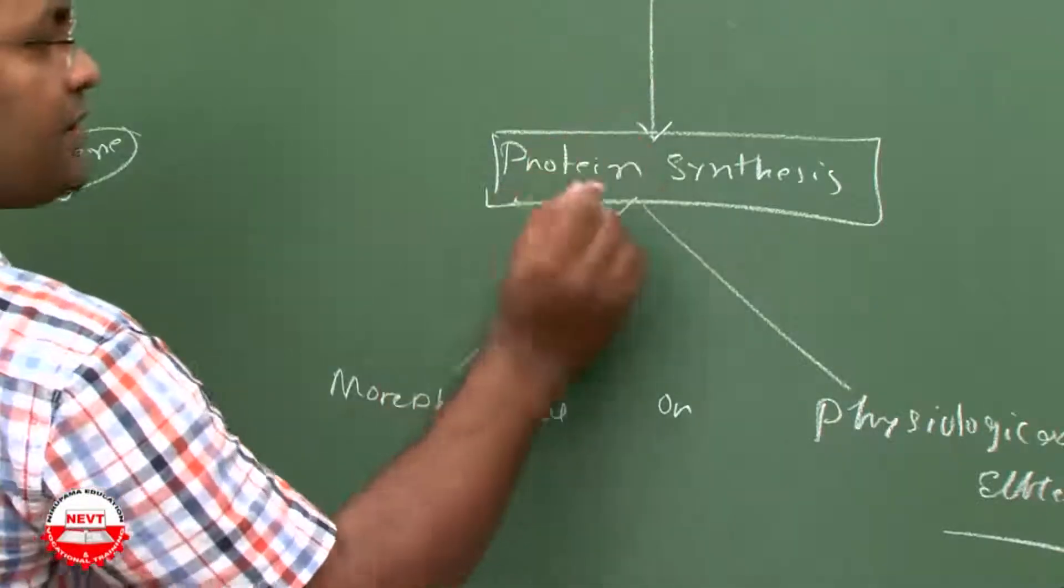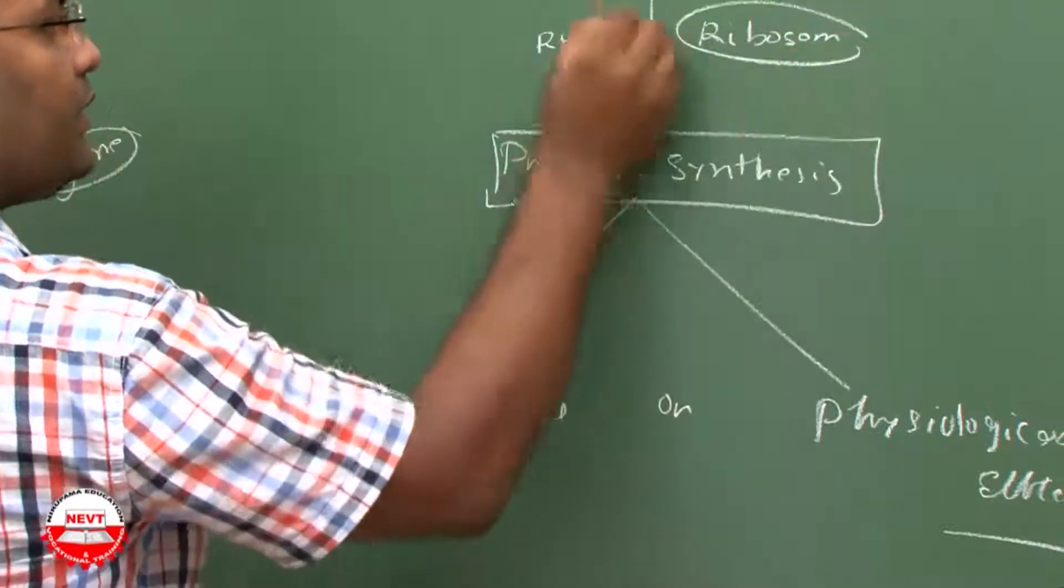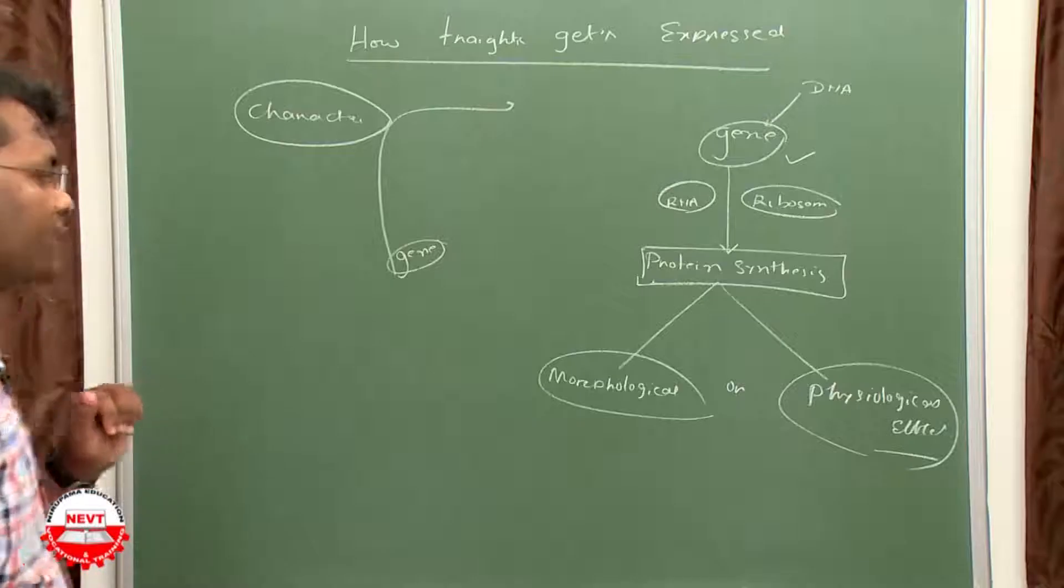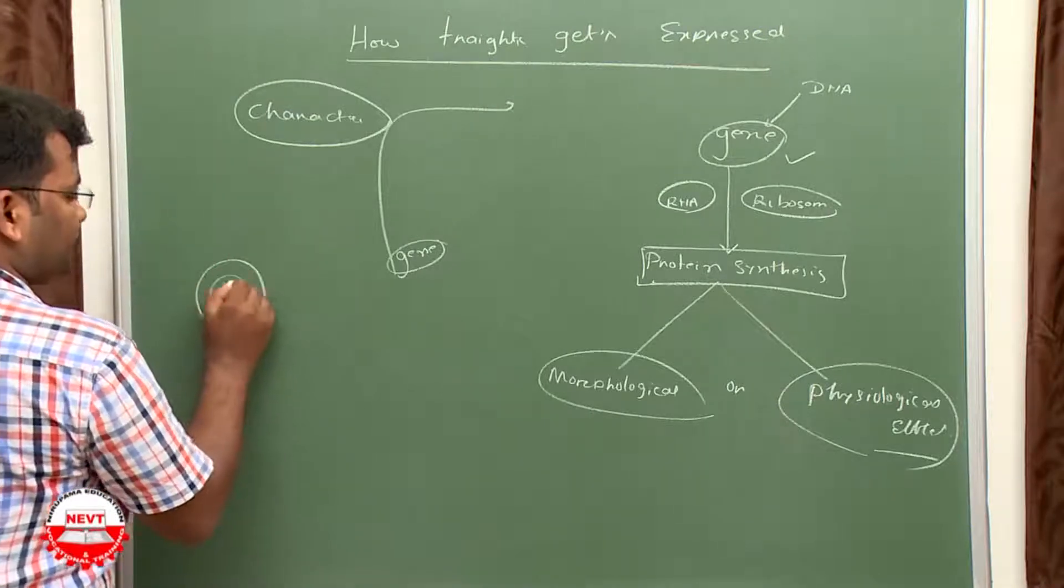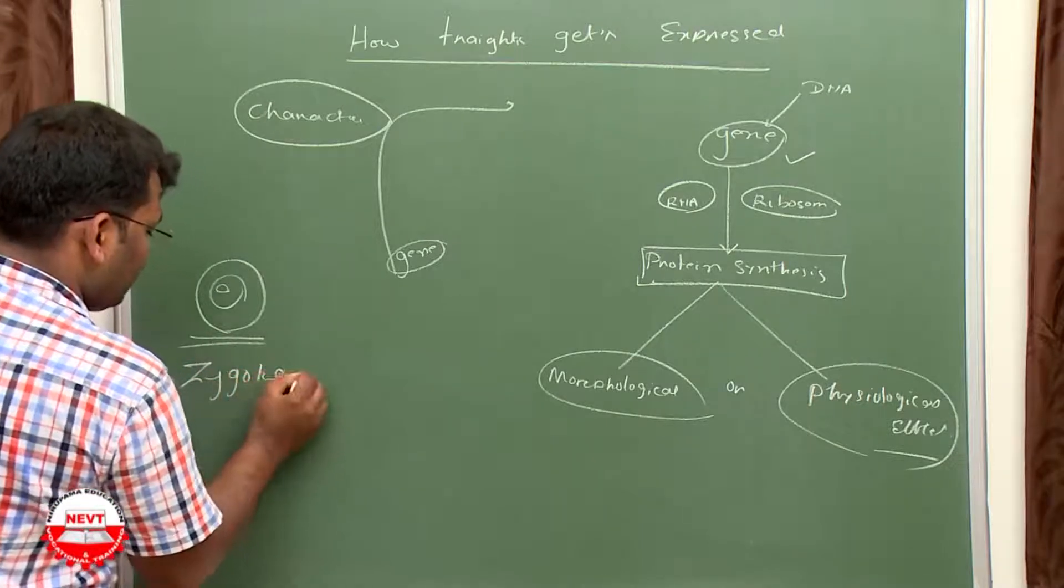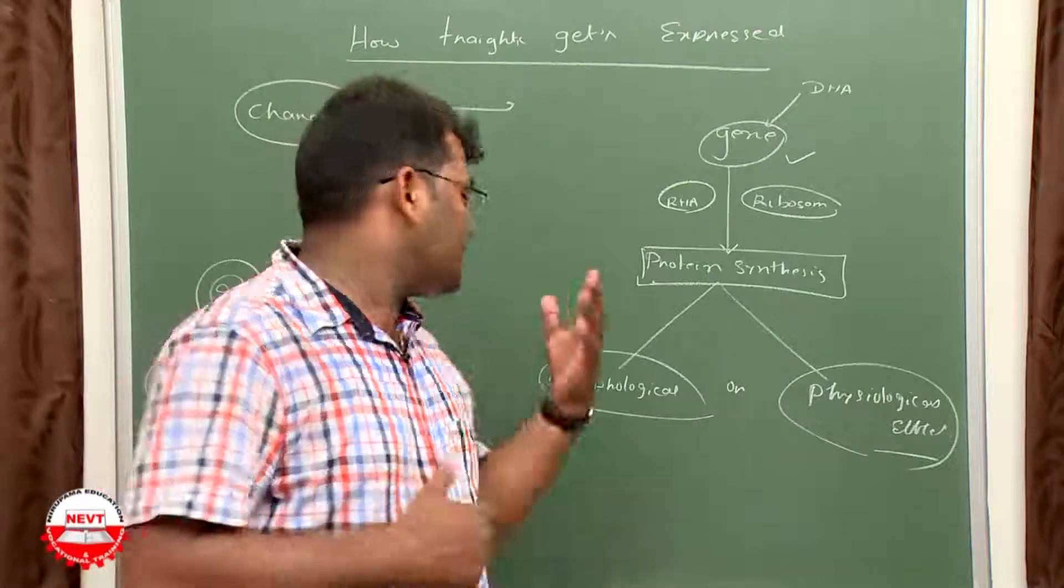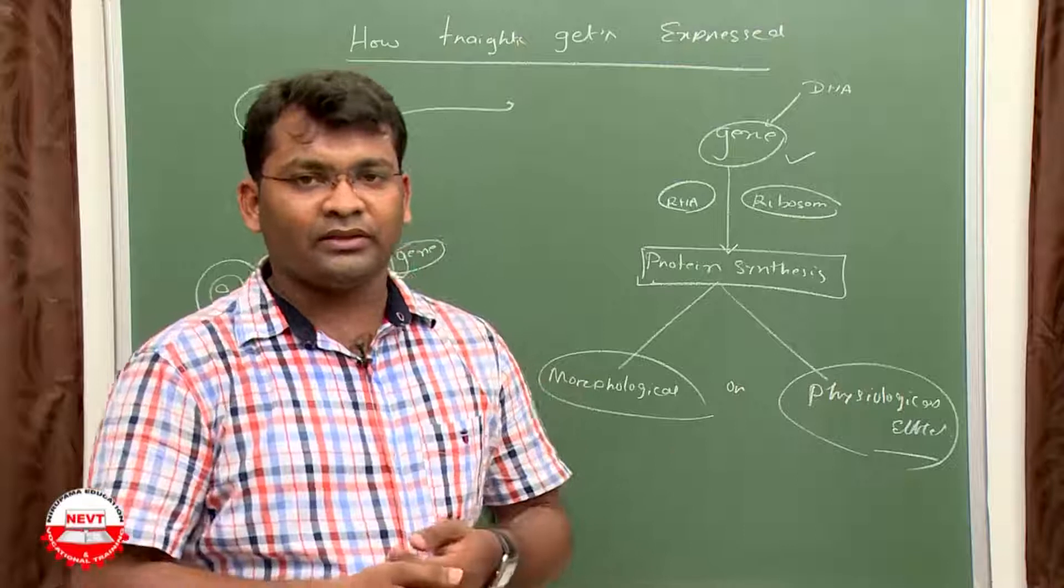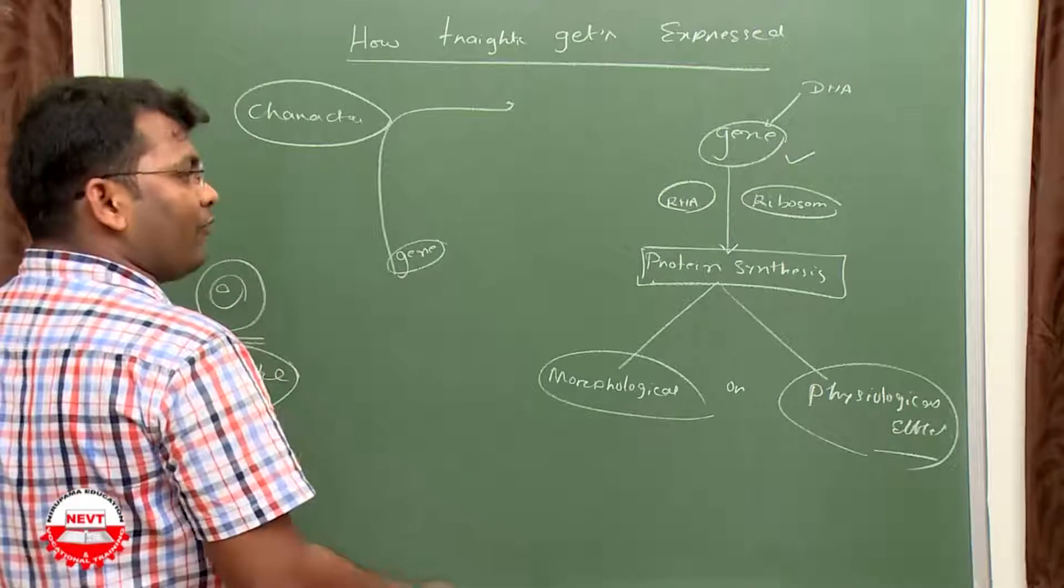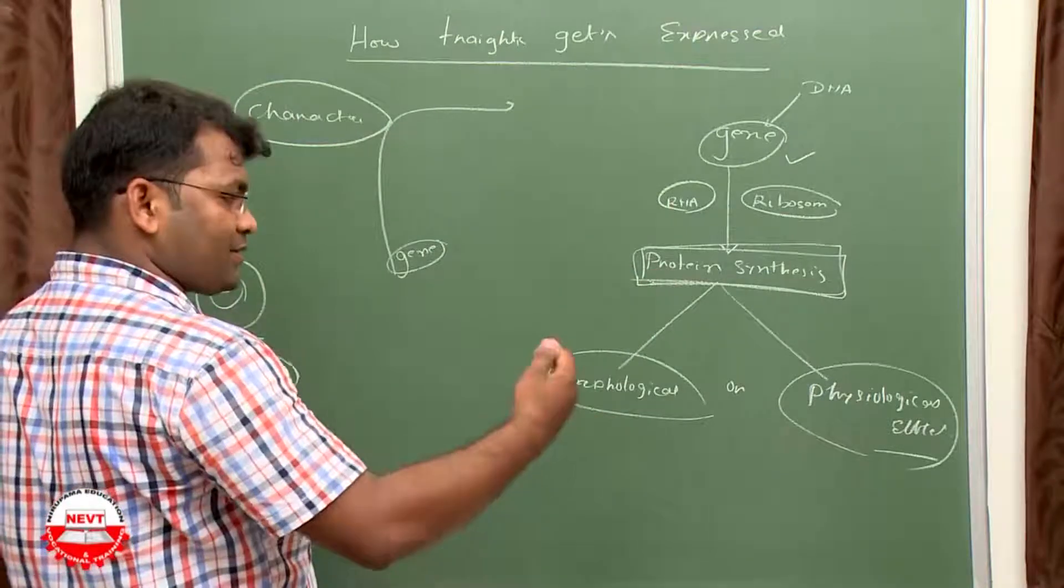Gene leads to protein synthesis by the help of protein, and that protein decides morphological structure and physiological effect. All the zygotes look similar. When zygotes are formed by the fusion of male and female gametes they look similar, but when they mature to form the organism, the organism's characters, morphological structures, and physiological functions all vary. Why? Different types of genes, different numbers of genes will decide the synthesis of the protein accordingly.